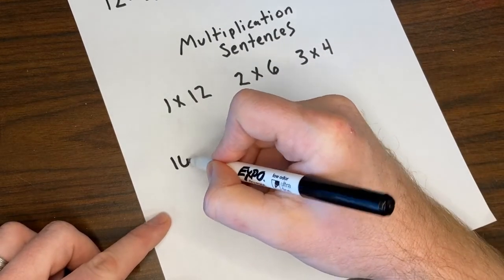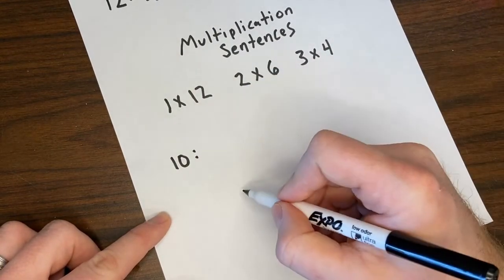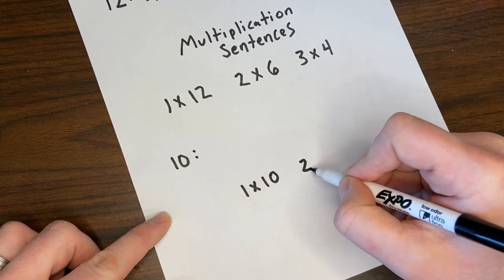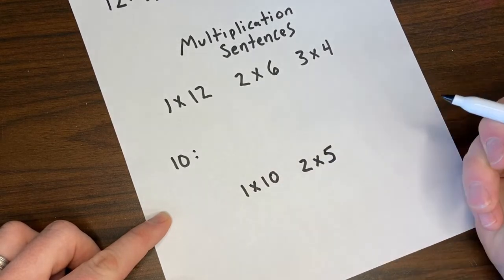So one more time, this time our target number is 10. Again, I'm always going to start with 1 and the number. So I have 1 and 10, then I try 2. 2 and 5.